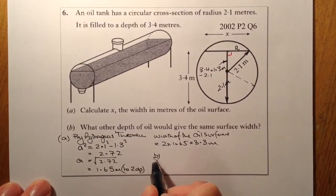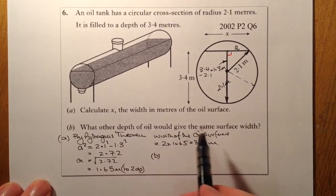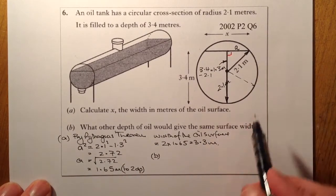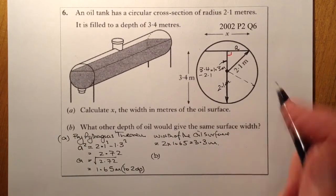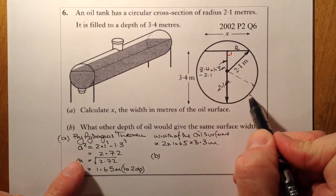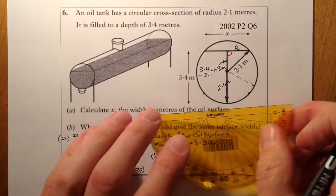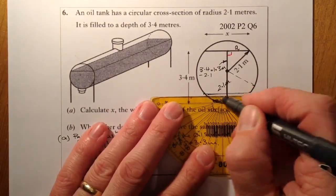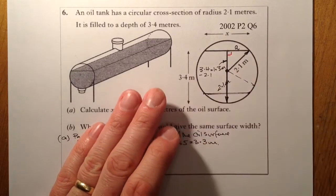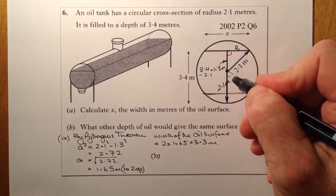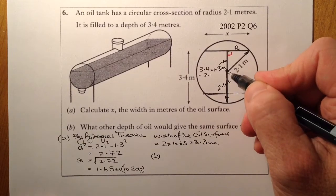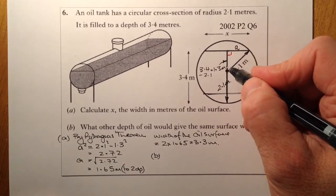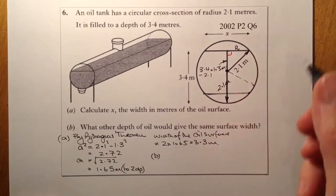For part B, what I'm looking at is what other depth of oil would give the same surface width. So it must be a width that's just down here somewhere. So I'd be looking for this part here. I know that's going to be 2.1 there, so I would know then that would be the same size here, so that would be 1.3.